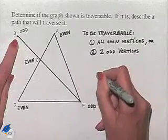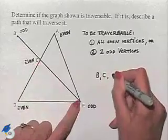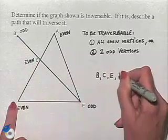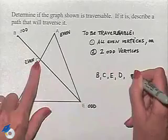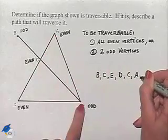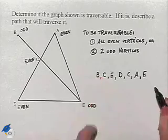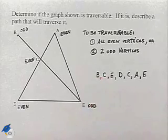So I'm going to go from B to C, down to E, over to D, back to C, then to A, and then finally at E. And so we began at one odd vertex and we ended at another, and that would be a path that traverses the graph.